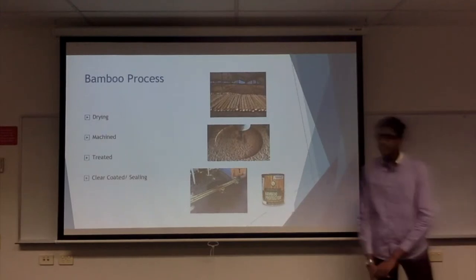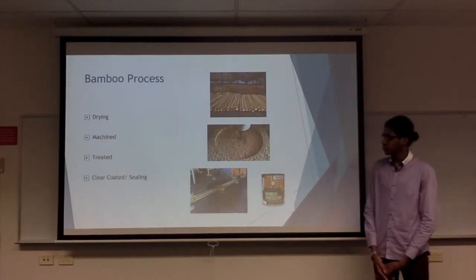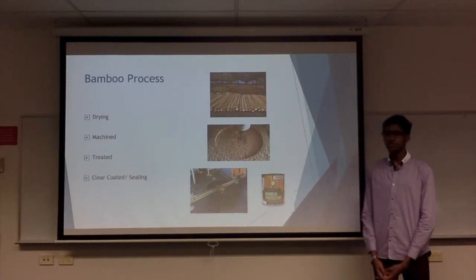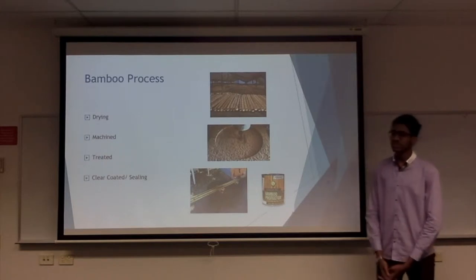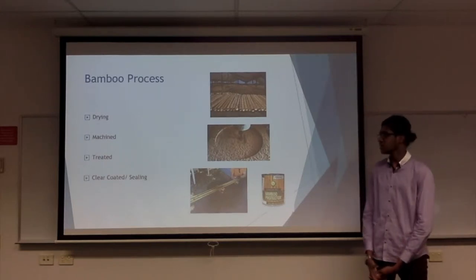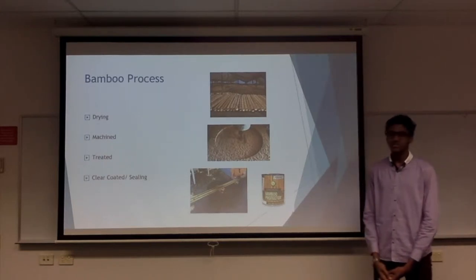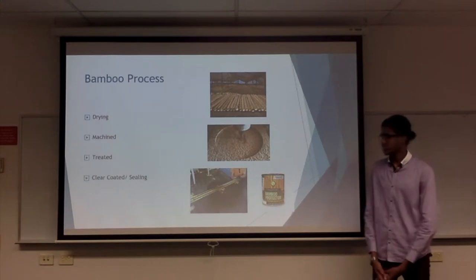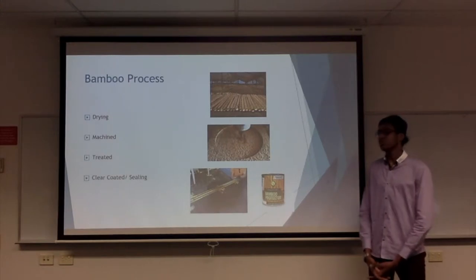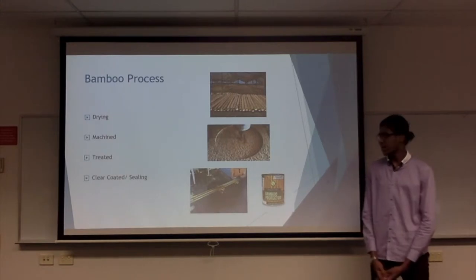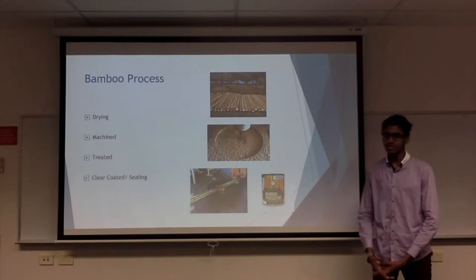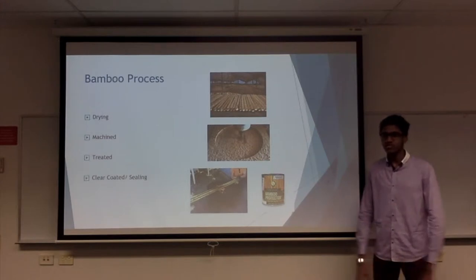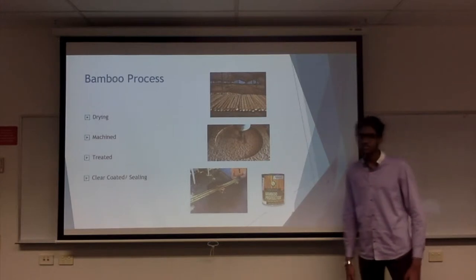Bamboo is processed within four simple steps: the drying, the machining, the treating, and the clear coat and sealing. The drying process can take up to six to twelve months. Machining is simply how the user desires it. Treating the material and clear coating is needed for processed materials; natural materials do not require this process.